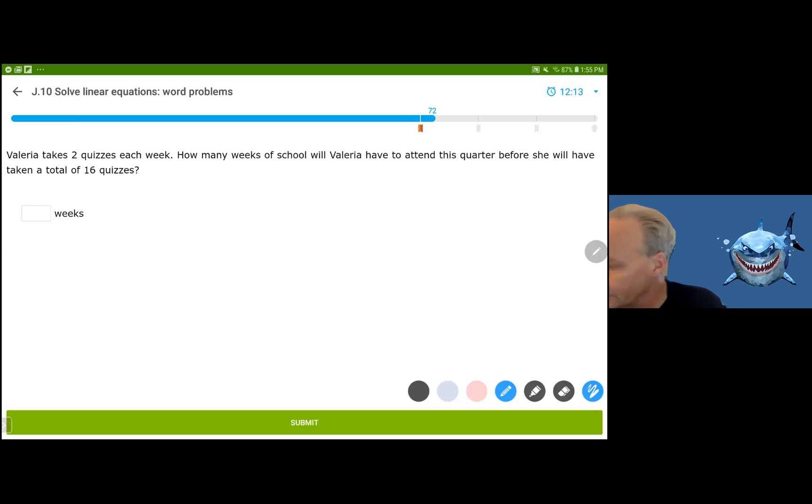Victoria takes two quizzes each week. That means she's going to take two each week. How many weeks of school will Valerie have to attend before she will have taken 16 quizzes? So the number of quizzes based on the number of weeks that goes by is 2W. And we want to know what happens, how many weeks have gone by if she's taken 16 quizzes. Clearly you can do it in your head. But again, it's good to practice the formal method. This is eight weeks.